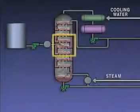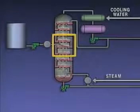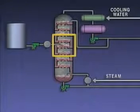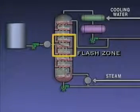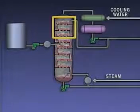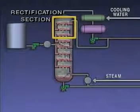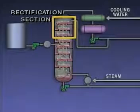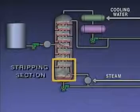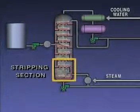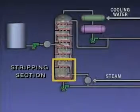Not every distillation tower is designed in the exact same way. However, every tower can be divided into three basic sections. The middle section is where the feed enters the tower and part of the feed vaporizes — this vaporization is commonly known as flashing, so this section is often called the flash zone. The section above the flash zone is called the rectification section, where the concentration of lighter components increases. The section below the flash zone is called the stripping section, where the lighter components are vaporized or stripped from the heavier liquid.